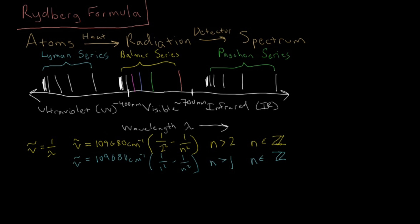And similarly, for the Paschen series, you might guess that we get 109680 wavenumbers, times one over three squared, minus one over n squared, and this time n is greater than three, and n is also an integer.